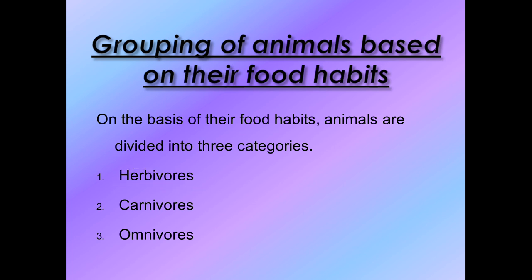Herbivores are animals that eat only plants. Now carnivores - think about it - if herbivores eat plants, then carnivores are animals that depend only on meat, meaning they hunt and eat other animals, like lion and tiger. They are completely dependent on the meat of other animals. Their food habit is completely meat-based, so such animals we group as carnivores.